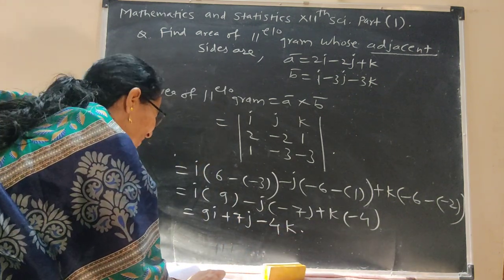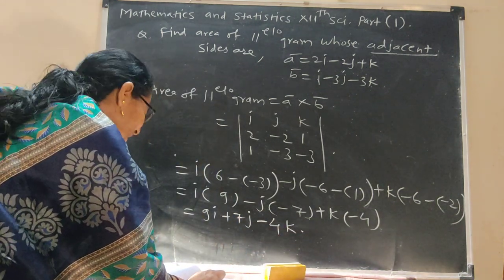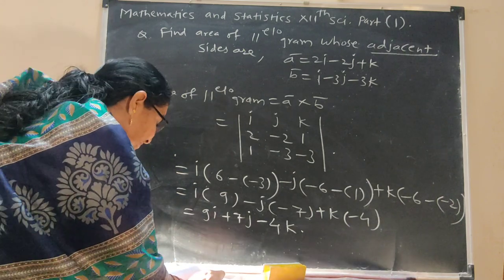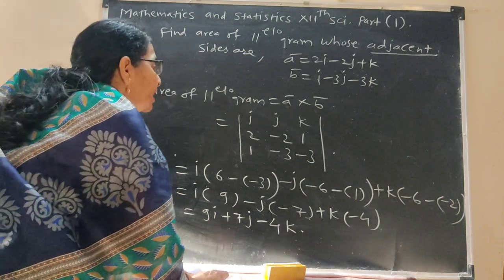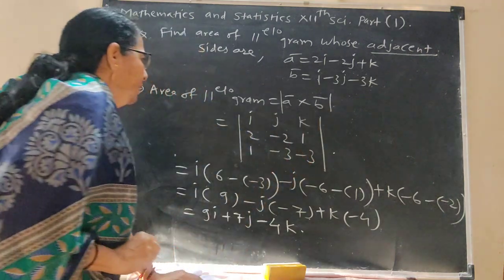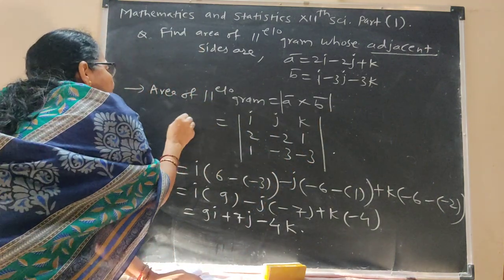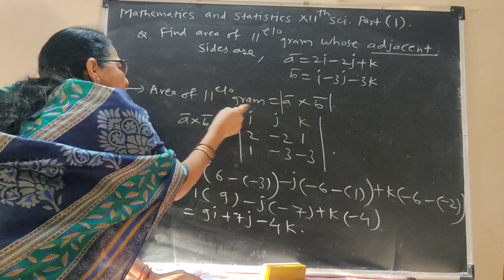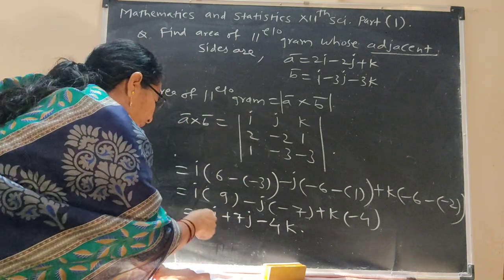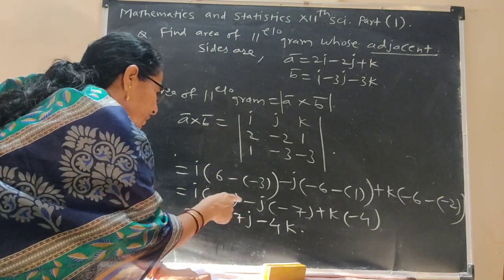And area of parallelogram equals magnitude of a bar cross b bar. First, find a bar cross b bar in this way: 9i plus 7j minus 4k.